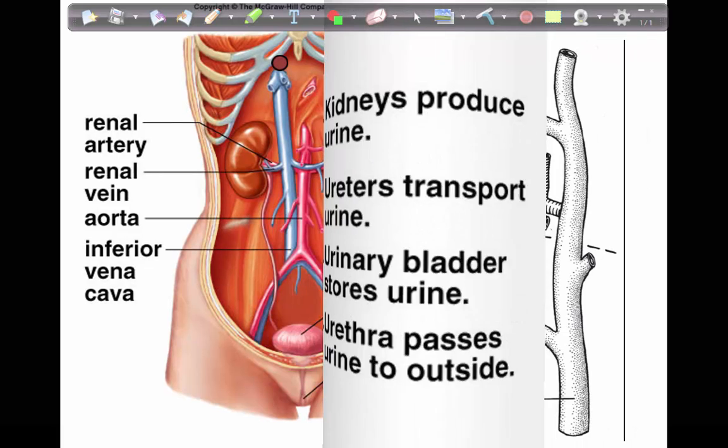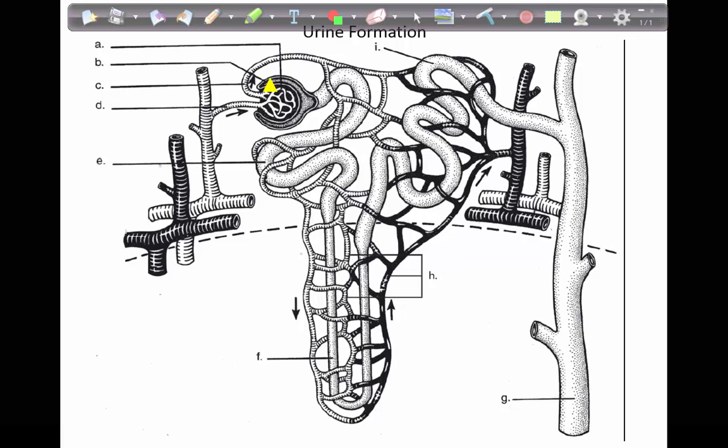Now let's look at the filtrate. Here we can see the filtrate traveling through the tubules of the nephron. It started off in the glomerular capsule, that C-shaped, backwards C-shaped tubule.